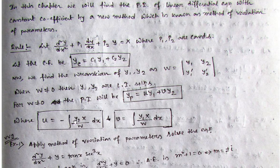So u equals minus of integration of y2 times X — that is the right-hand side function — divided by the Wronskian determinant value, dx. And v equals integration of y1 times X divided by the Wronskian, dx. There is a theorem behind this rule but it is not in our syllabus. For the exam, we must memorize the three boxed formulas and use them to solve problems.